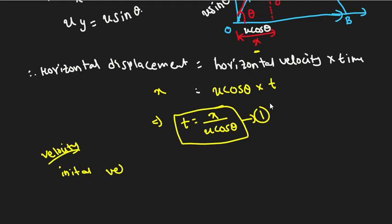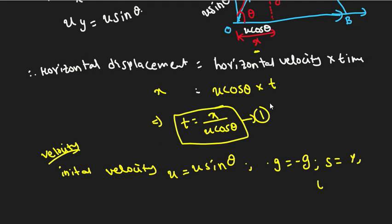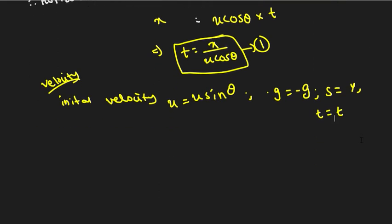Now let's do the vertical displacement. Because the velocity is changing in the vertical direction, the initial velocity u equals u sinθ, acceleration due to gravity is minus g, and vertical displacement s equals y.